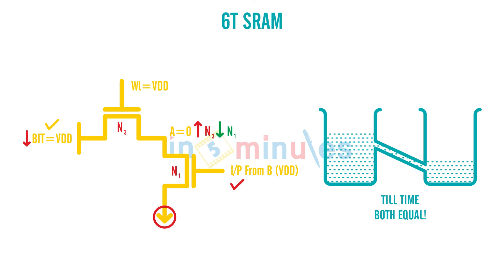We cannot lose this 0 because we want it to be read correctly. So there is a fight between N3 and N1 — N3 pulling node A toward logic 1 and N1 pulling it toward logic 0 — and one of them needs to win.